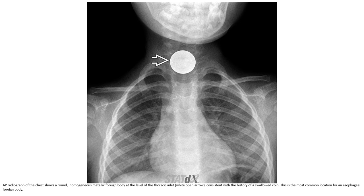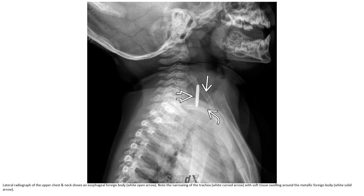This is an AP radiograph of the chest showing a round homogeneous metallic foreign body at the level of the thoracic inlet, consistent with the history of swallowing a coin. This is the most common location for an esophageal foreign body. The lateral radiograph of the upper chest and neck also shows the esophageal foreign body. Note the narrowing of the trachea with soft tissue swelling around the metallic foreign body.